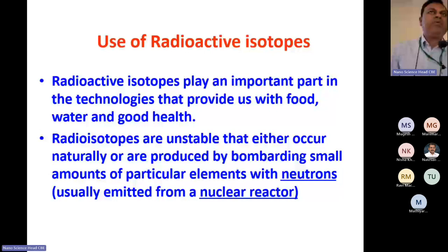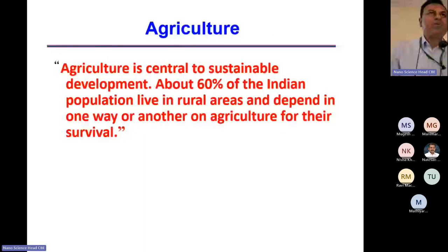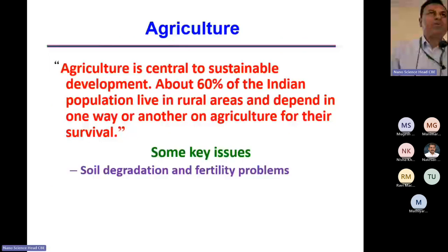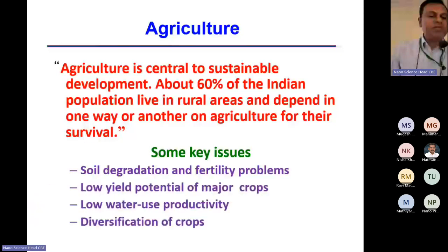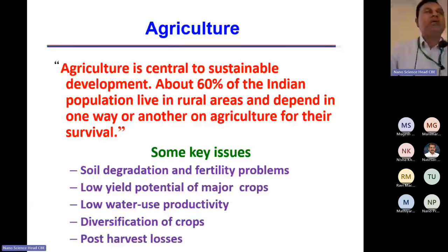Now, coming to agriculture — agriculture is our main sector, with more than 50 to 60% of the population engaged in agricultural occupations. There are key issues related to the agricultural production system: soil degradation and fertility problems, low yield of major crops, low water use productivity, diversification of crops, and post-harvest losses. All these key issues can be very well addressed by nuclear technology.